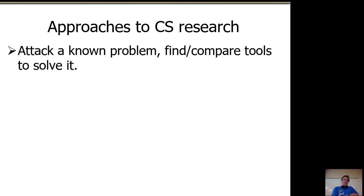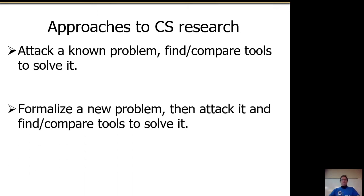For CS, the most common approach is to attack a known problem and find and compare tools to solve it. This is not particularly exciting — if you take a known problem and known tools, you will probably struggle to publish such a paper because there's nothing novel. Known tools applied to known problems. A master's thesis, yes — if no one's ever done that comparison of here are the five tools that might solve this problem, which is most efficient, you've added real knowledge. Another approach is to formalize a new problem, then attack it and find and compare tools to solve it. If you formalize a new problem and solve it, you are by definition at the state of the art. The hard part is defining a problem that someone cares about and that you can solve — finding the Goldilocks problem.